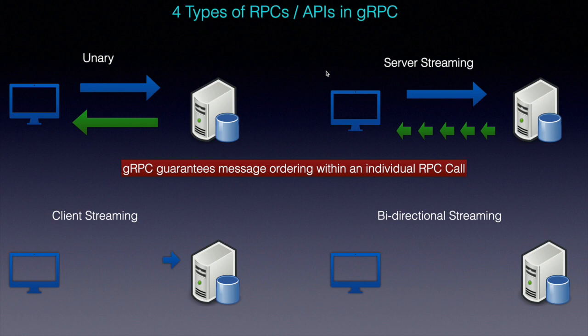The third type is client streaming API. The client writes a sequence of messages and sends them to the server. Once the client has finished writing messages, it waits for the server to read them and return its response — which in this case will be a single response. Again here, message ordering is guaranteed.